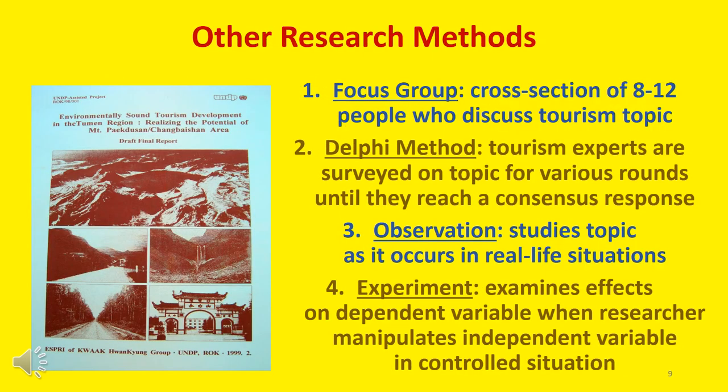In addition to questionnaire surveys, tourism research uses various other methods of inquiry. Number one, focus groups bring together a cross section of eight to twelve people to discuss a topic such as tourist motivations. Two, the Delphi method consists of tourism experts being surveyed about a topic with various rounds of questions being asked until a consensus is reached. Three, observations study topics as they occur in real-life situations. And four, experiments examine the effect of a dependent variable when an independent variable is manipulated by a researcher in a controlled situation.